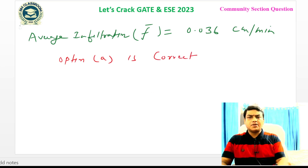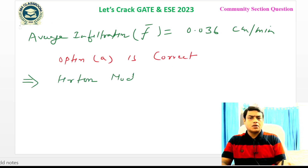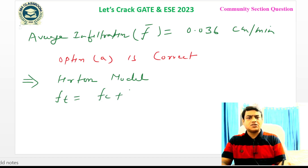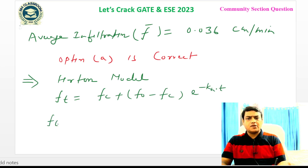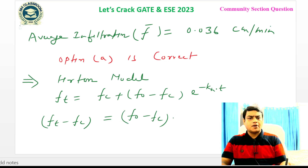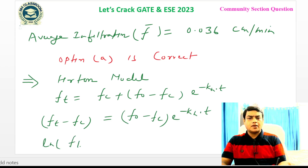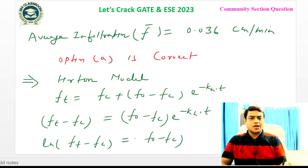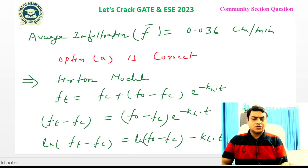Apart from the question, the Horton model is sometimes asked about separately. Starting from Horton's equation Ft = Fc + (F0 - Fc)e^(-Kh·T), rearranging gives Ft - Fc = (F0 - Fc)e^(-Kh·T). Taking the natural log of both sides: ln(Ft - Fc) = ln(F0 - Fc) - Kh × T.